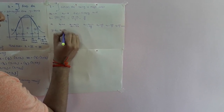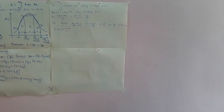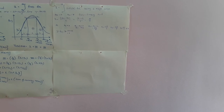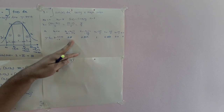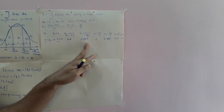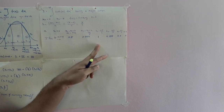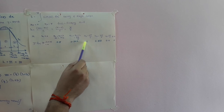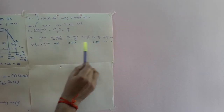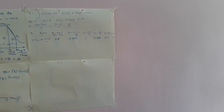Evaluating the y-values using a calculator: y0 = sin(0) = 0, y1 = sin(π/6) = 0.5, y2 = sin(2π/6) = 0.86, y3 = sin(3π/6) = sin(π/2) = 1, y4 = sin(4π/6) = 0.86, y5 = sin(5π/6) = 0.5, y6 = sin(π) = 0. The values repeat symmetrically after π/2 because it is a sine curve.